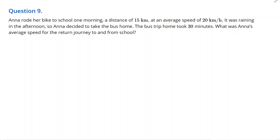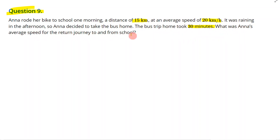Welcome. We're going to go through question nine here — it's a bit of a long one. It says: Anna rode her bike to school one morning, a distance of 15 kilometers at an average speed of 20 kilometers per hour. It was raining in the afternoon so Anna decided to take the bus home. The bus trip home took 30 minutes. What was Anna's average speed for the return journey to and from school?